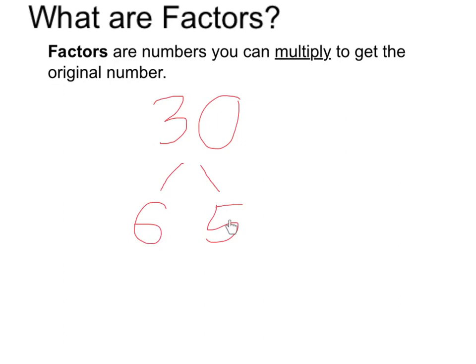Therefore, 6 and 5 are factors of 30 because 6 times 5 equals 30.